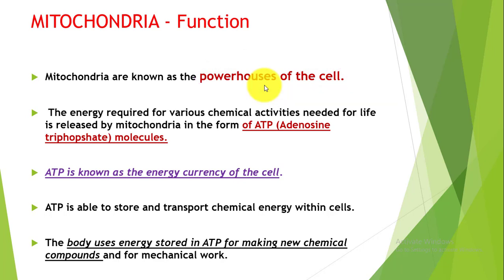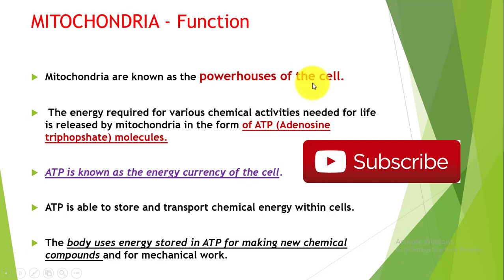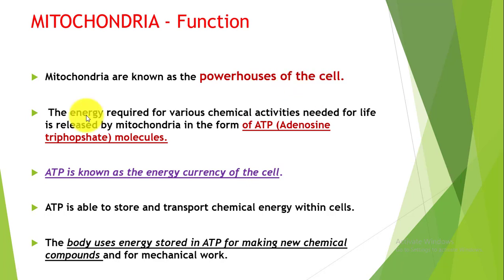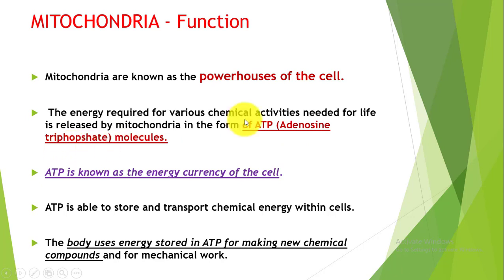A cell performs a lot of chemical activities and functions, and to perform all these chemical activities, energy is required by the cell — energy that is needed for life to go on and for proper functioning of the cell. All the energy released to the cell is released by mitochondria in the form of ATP — adenosine triphosphate — which we call the energy currency of the cell. Energy is released in a packaged form.